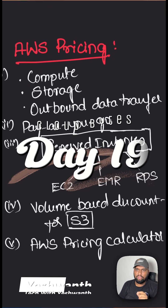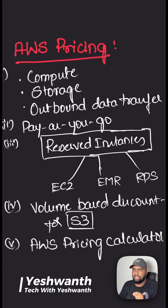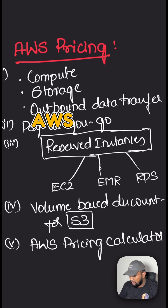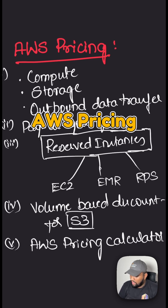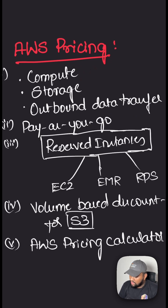Similar to the video that you saw, there are three fundamental drivers of cost with AWS. One is the compute cost, another is the storage cost, and finally the outbound data transfer.